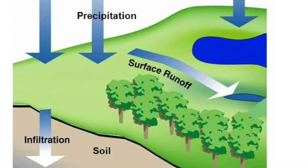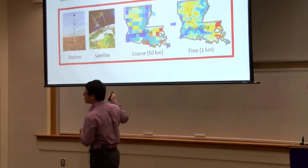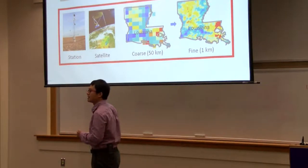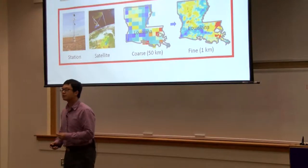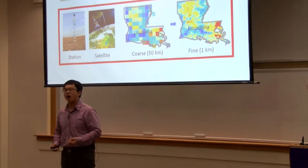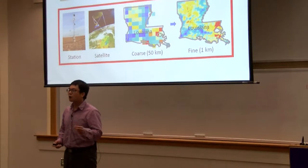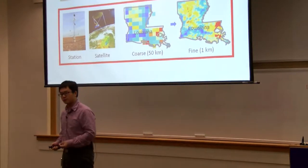However, when precipitation comes rapidly, the infiltration rate is exceeded and surface runoff is likely to happen. As a result, floods occur when large volumes of surface runoff flow quickly into rivers and streams.